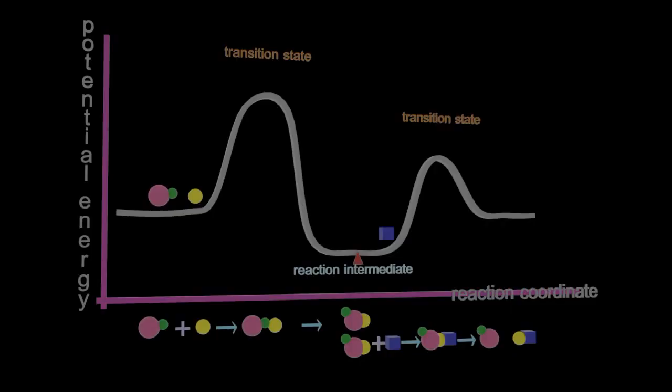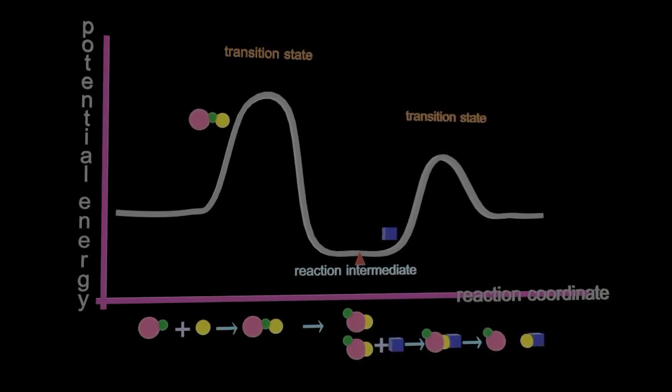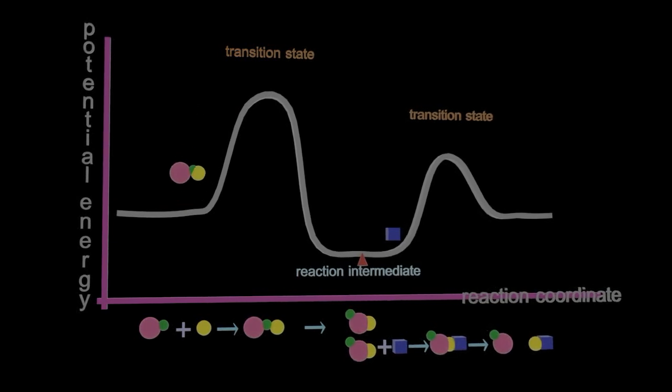This is an energy profile for a two-step mechanism. It looks like it's exothermic then endothermic, with the first step being the slower step with higher activation energy. These reactions don't have enough energy to get over the activation energy hump.